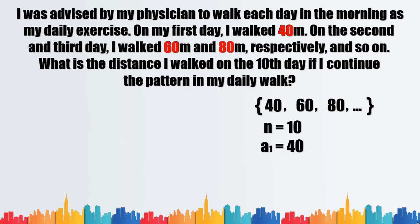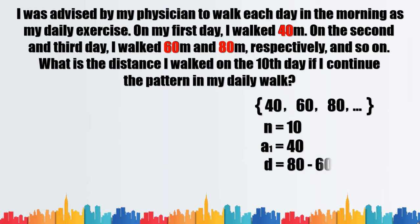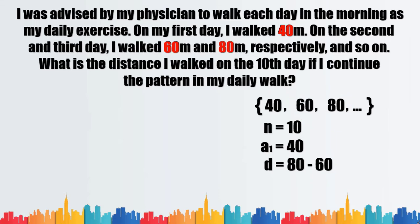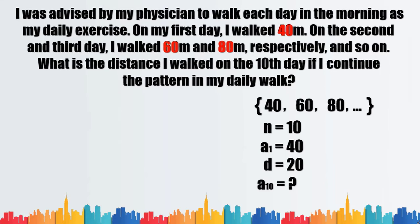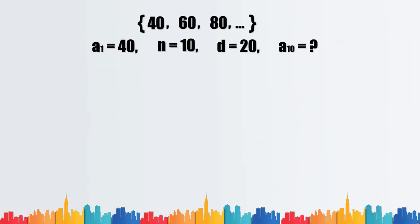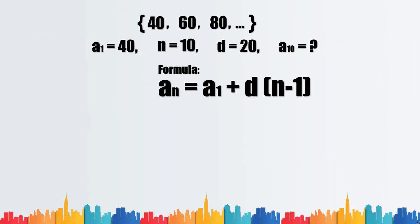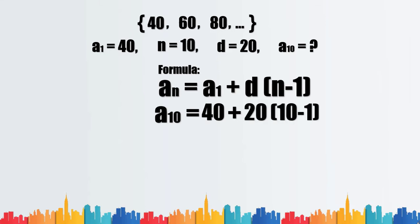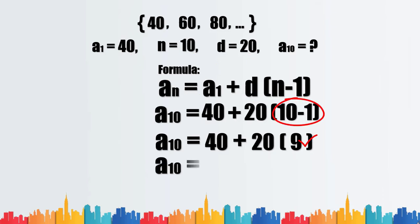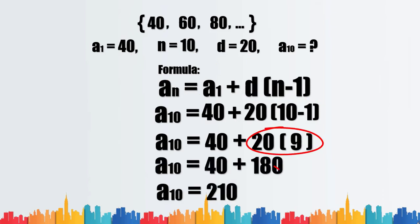The value of our first term a sub one is 40, since it was his first data when he started his daily walk. Then we find the difference of two consecutive terms: 80 minus 60 gives us 20 as our common difference. We now use the formula for arithmetic sequence and substitute the known terms. Therefore, on the 10th day he will have a distance of 210 meters.